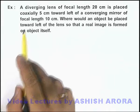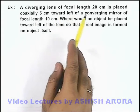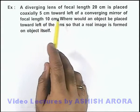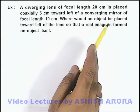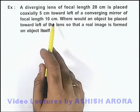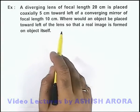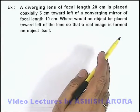In this example we are given that a diverging lens of focal length 20 centimeters is placed coaxially 5 centimeters toward left of a converging mirror of focal length 10 centimeters, and it is asking where would an object be placed toward left of the lens so that a real image is formed on the object itself.